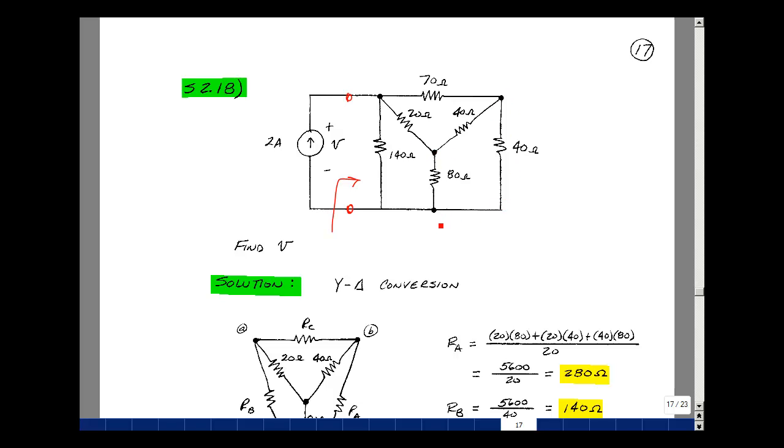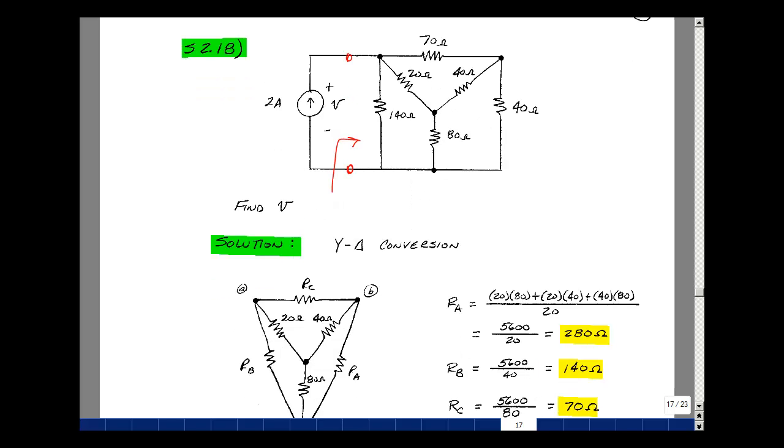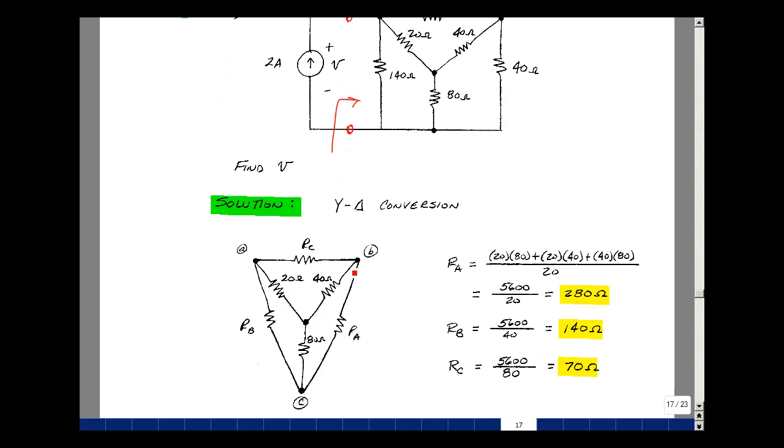But I do have a Y inside here, so I could do a Y to delta conversion and convert this into a resistance between here, between here and here, and between here and here. So let's redraw this Y: 20 ohms, 40 ohms, and 80 ohms. I'm going to call this node A, B, and C.